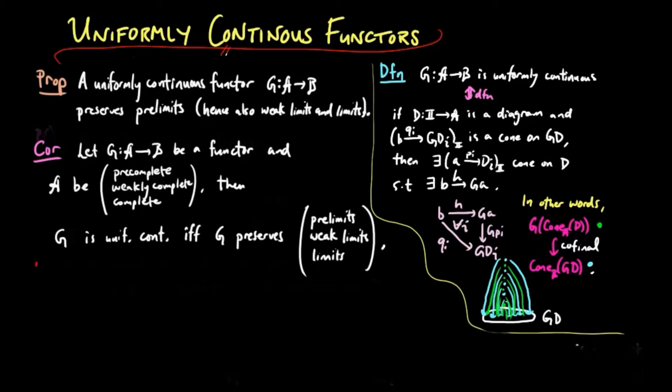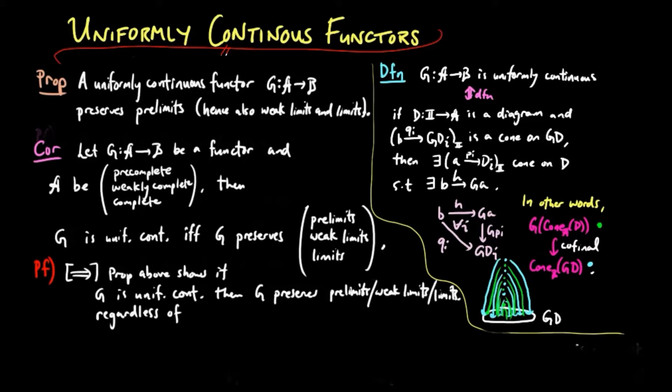To prove the forward direction by the proposition above, if G is uniformly continuous, then G preserves all pre-limits, weak limits, and limits that exist in A, regardless of whether A is pre-complete, weakly complete, or complete.